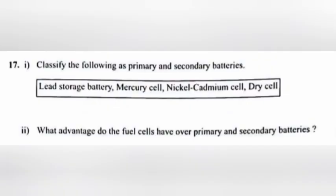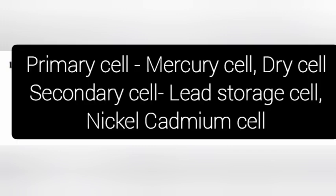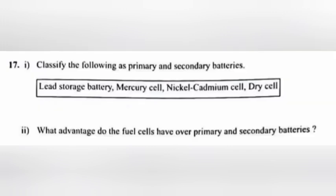Question 17.1: Classify the following as primary and secondary batteries. Primary cells: mercury cell and dry cell. Secondary cells: lead storage battery and nickel cadmium cell.